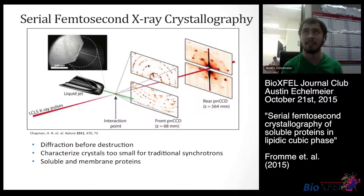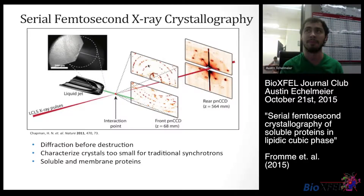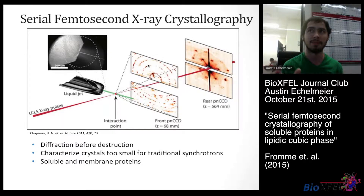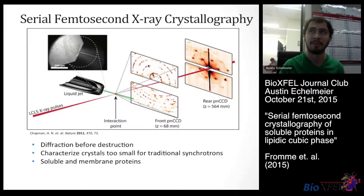The crystals shot through the liquid jet are much smaller than is usable by traditional synchrotron methods. If we put a really small crystal inside a traditional synchrotron, it would just be destroyed immediately, and we wouldn't be able to get many, if any, diffraction patterns from it. This method has been done with soluble and membrane proteins so far.